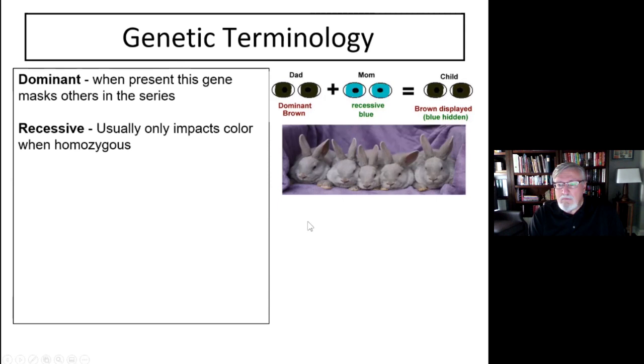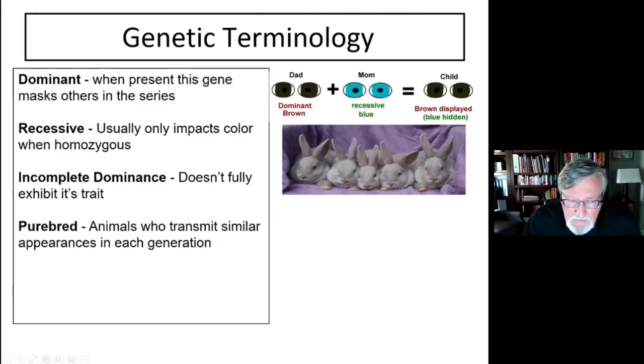This is a litter of dilute rabbits, which means they all carry recessive dilution genes. There's something called incomplete dominance, and incomplete dominance doesn't fully exhibit its trait. As David said in the introduction, if you bear with me through this presentation, I go into a lot of detail in the advanced coat color genetics presentation about incomplete dominance, especially in the C series.